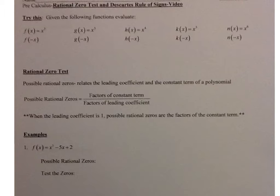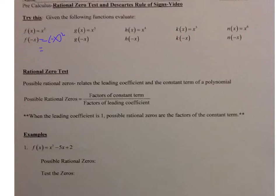Let's take a look at the first one. We have f of x is equal to x squared, and I'm looking for f of negative x. So I have negative x squared, and that's negative x times negative x, which is positive x squared.